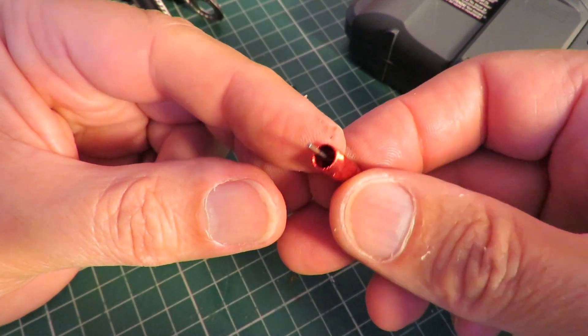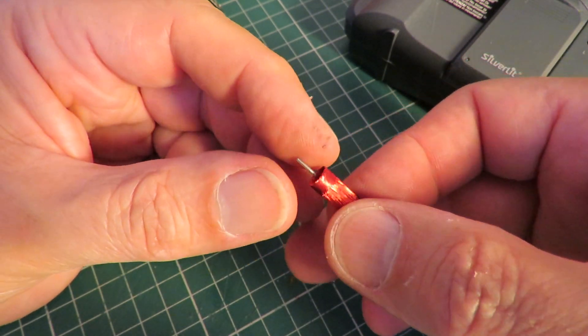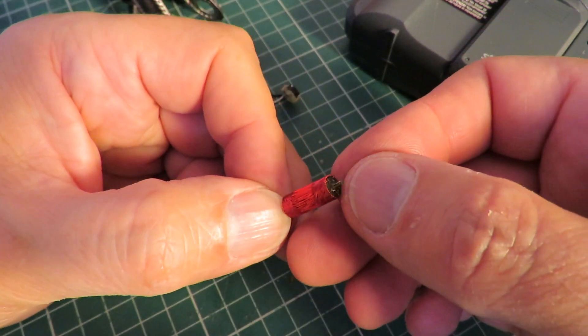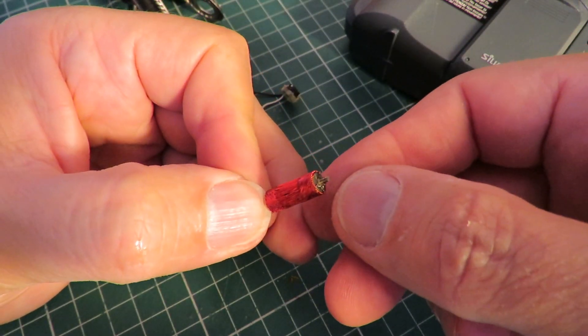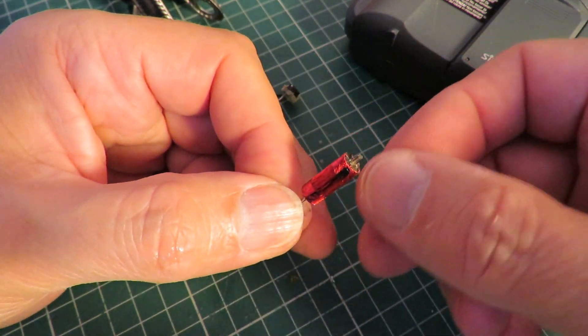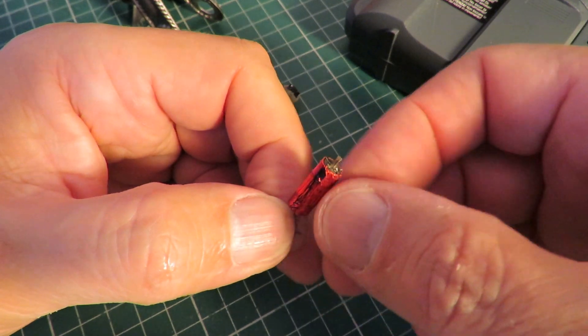So that's our coreless armature. The wires go from the commutator to the armature, wrapped round and round, come back to join the next one and so on.